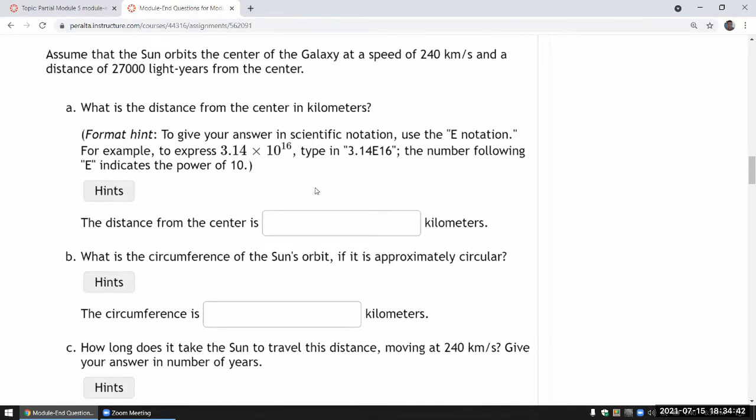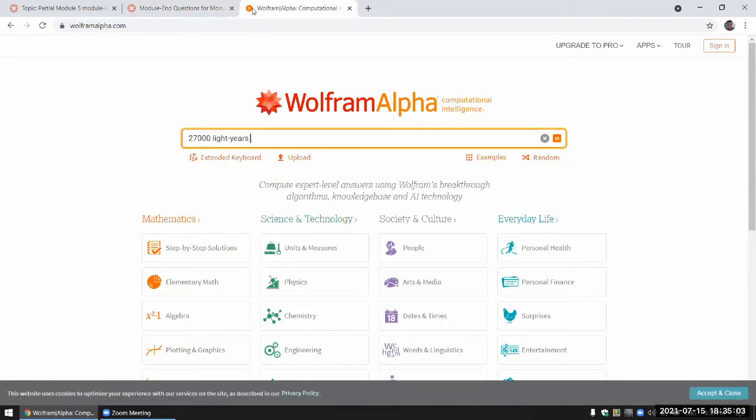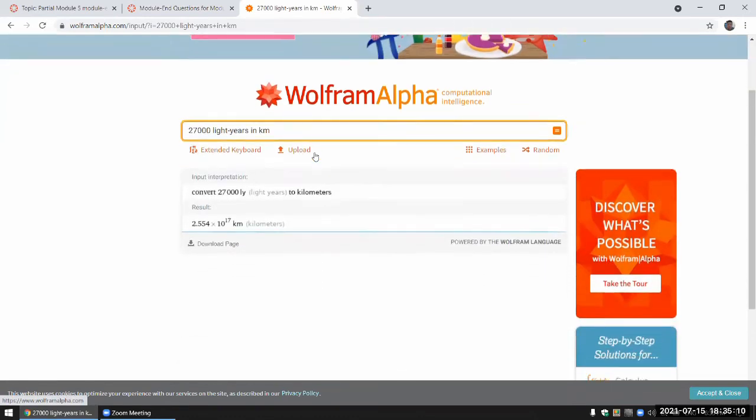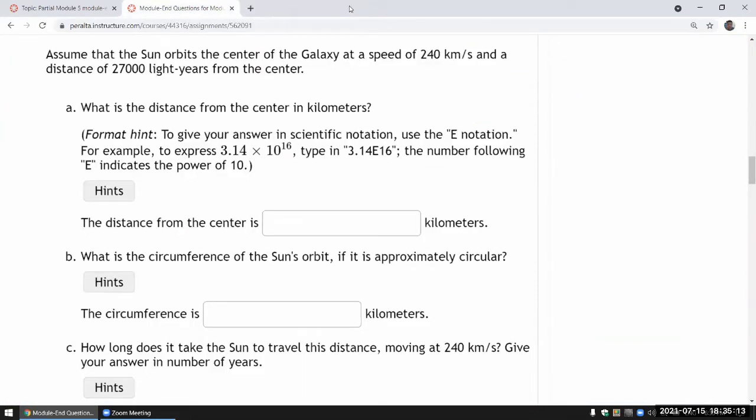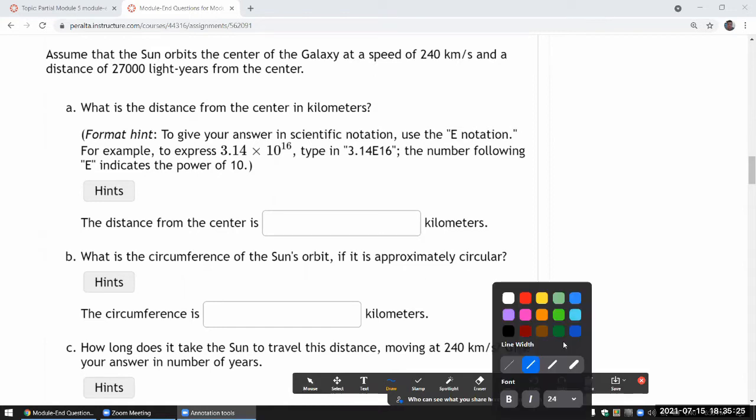So here it asks, what is the distance from the center in kilometers? Oh, so I'd have to convert light years to kilometers. Let me do that by hand. There is a way to do it automatically—you could use Wolfram Alpha. If you just type in 27,000 light years in kilometers, it'll convert that for you. But I think there's value in knowing how to do this by hand, so let me show you these unit conversion steps and it has to do with understanding what light year means physically.